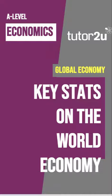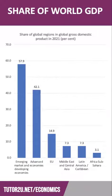When you're studying globalisation, it's handy to have some key stats on the world economy at your fingertips. More than half of the annual world output of goods and services now comes from emerging market and developing countries — 58% according to the data for 2021. Advanced economies are now down to 42%.